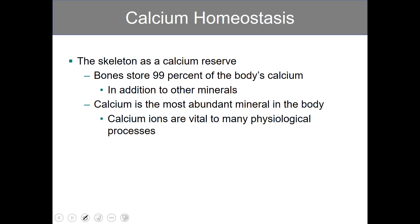The skeleton is basically a large calcium reserve. In fact, theorists have suggested that bone evolved as a means of storing calcium because calcium is so important for various facets of physiology. Our bones store roughly 99% of the body's calcium, in addition to other things such as phosphate. Calcium is the most abundant mineral in the body, and calcium ions are vital to many physiological processes, such as muscle contraction.